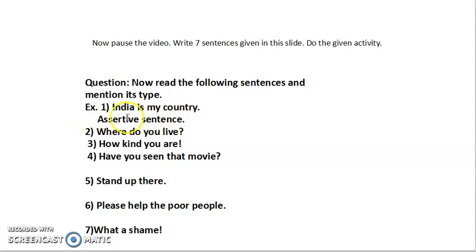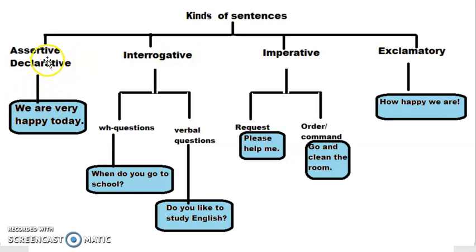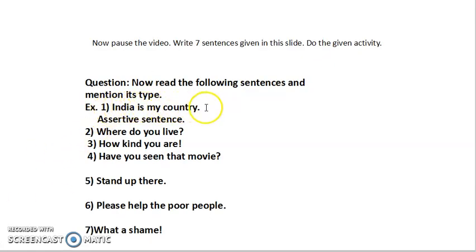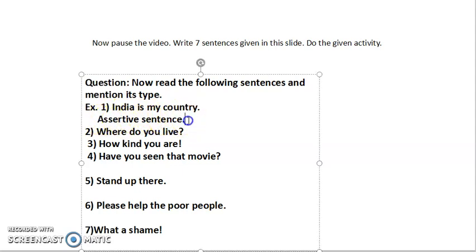The first answer is given here. 'India is my country.' What type of sentence is this? Is it a question? No. Is it a request or order? No. Is it exclamatory? No. This is a declarative sentence — an assertive sentence. We are telling something, we are declaring something. So the type is assertive or declarative sentence.